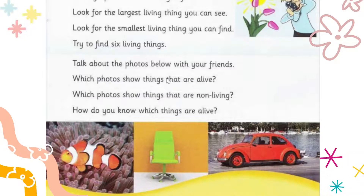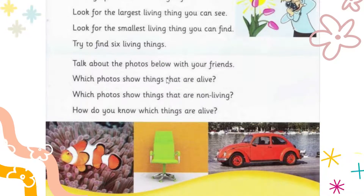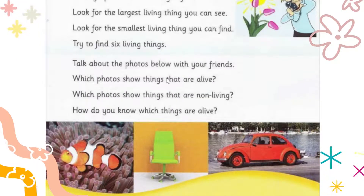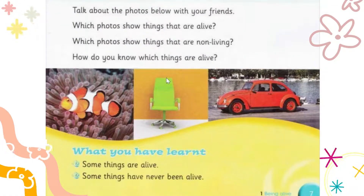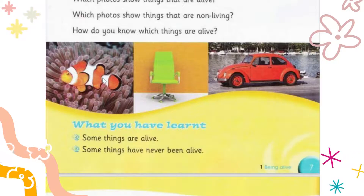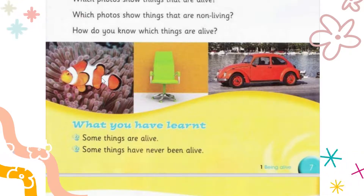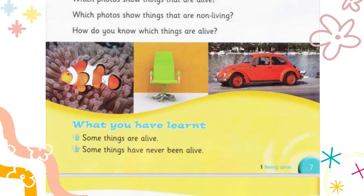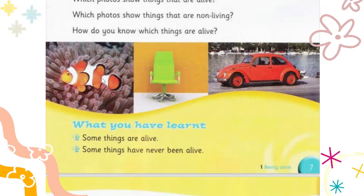Talk about your findings with your friends when you're done — discuss whether each thing is living or non-living and how you figured it out. Here are some examples: there is a fish — is it a living or non-living thing? Yes, correct — it is a living thing because fish grows, fish moves, fish takes a breath.